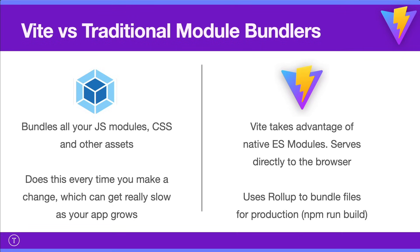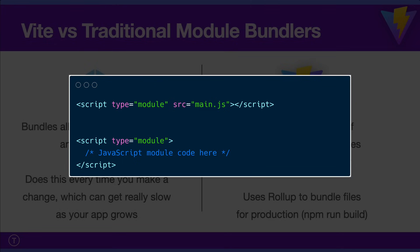When you use Create React App, it's actually using webpack under the hood. The issue with webpack is that when you're in development and you make a change, it goes through that full bundling and transpiling process with Babel every single time. That's okay at first, but as you install more packages and your application grows, it starts to get really slow. Vite works differently — in development it's not re-bundling everything every time. Instead, it takes advantage of native ES modules in the browser, which support import/export syntax.